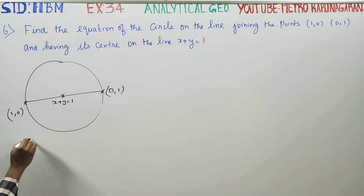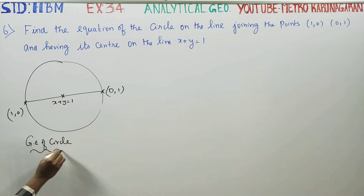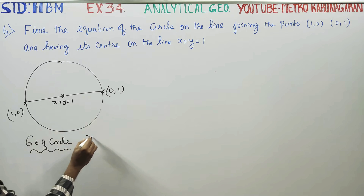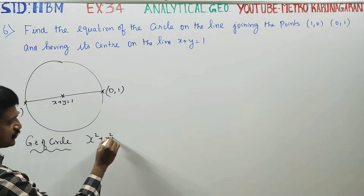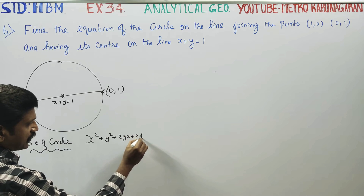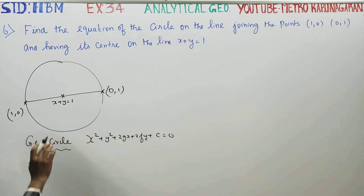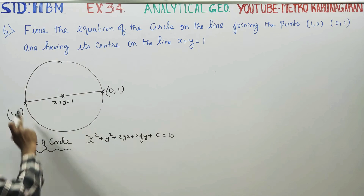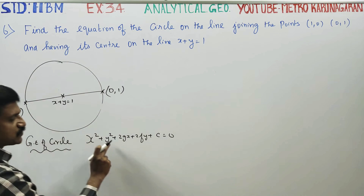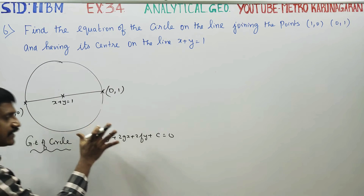The General Equation of Circle formula is: x² plus y² plus 2gx plus 2fy plus c is equal to 0. This is the general equation of circle formula we will use.